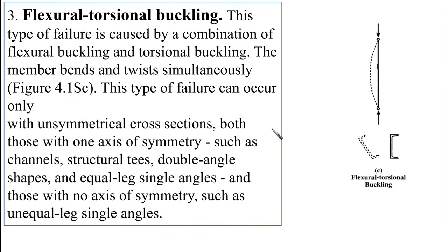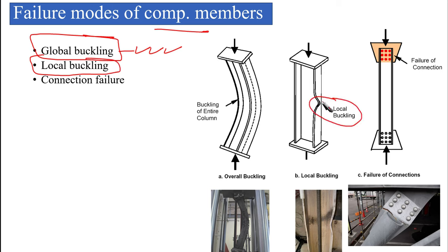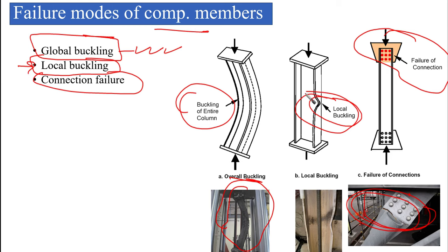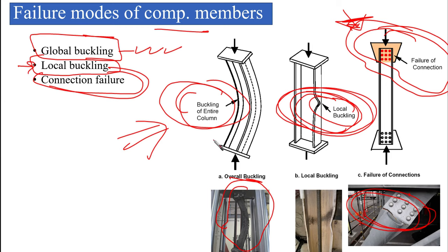In summary, compression member failure modes include: global buckling (three types — flexural, torsional, and flexural torsional), local buckling (buckling of individual plate elements), and connection failure (failure of the connection itself). Our study so far has focused on global flexural buckling. Local buckling will be addressed when covering compact, non-compact, and slender elements. Connection failures will be covered in the connections chapter.